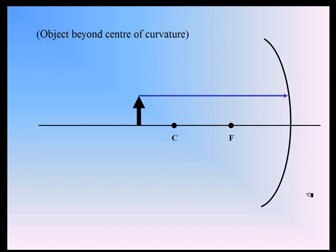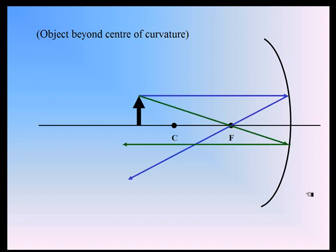Let's draw the three rays. One is parallel, and then through the focal point. Another one is through the focal point, and then parallel. As you can see, that's all we really have required.